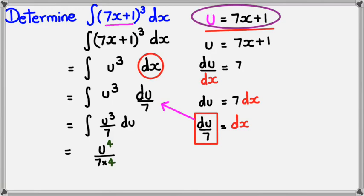Sorry, I forgot the +c there. So what we can do is replace the u with 7x+1, so your final answer for this would be (7x+1)⁴/28 + c. And that's how you do integration by substitution. Now you can always differentiate this final answer to see whether you come back to the question.